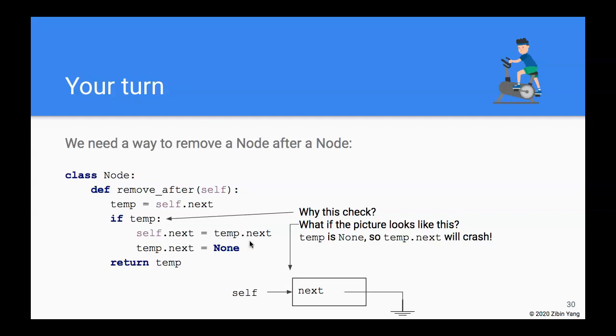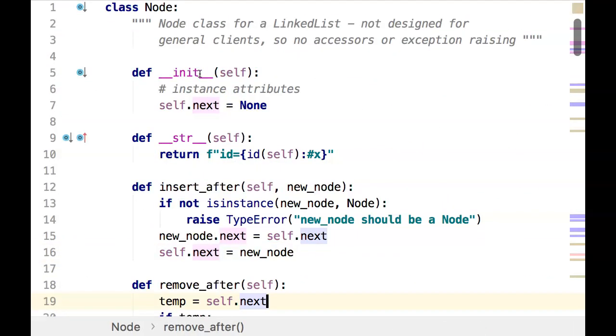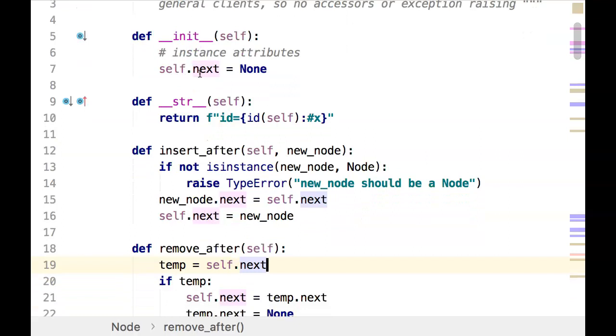And it would raise an exception, so that's the reason for the check here. So this is the Node class—it's slightly more complicated than the one we did before, but still fairly simple and straightforward.